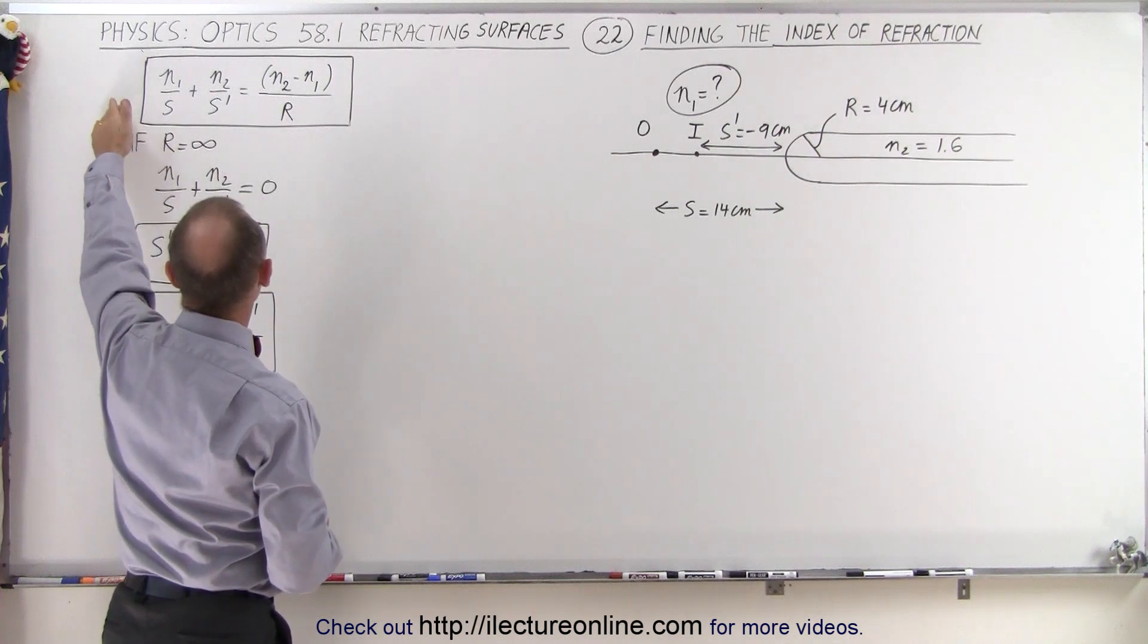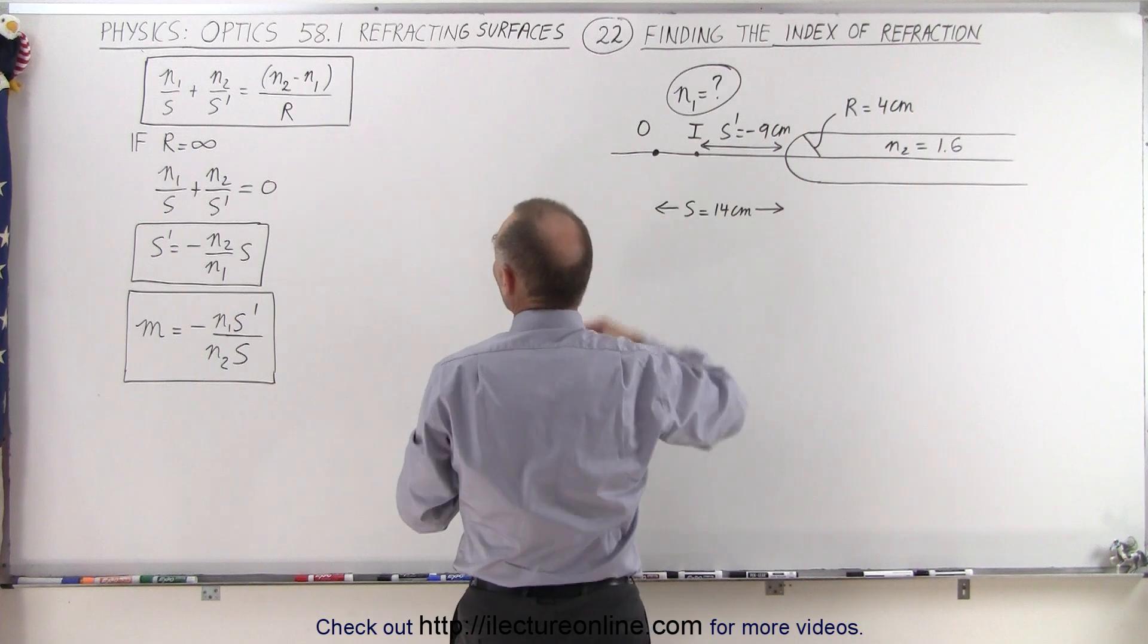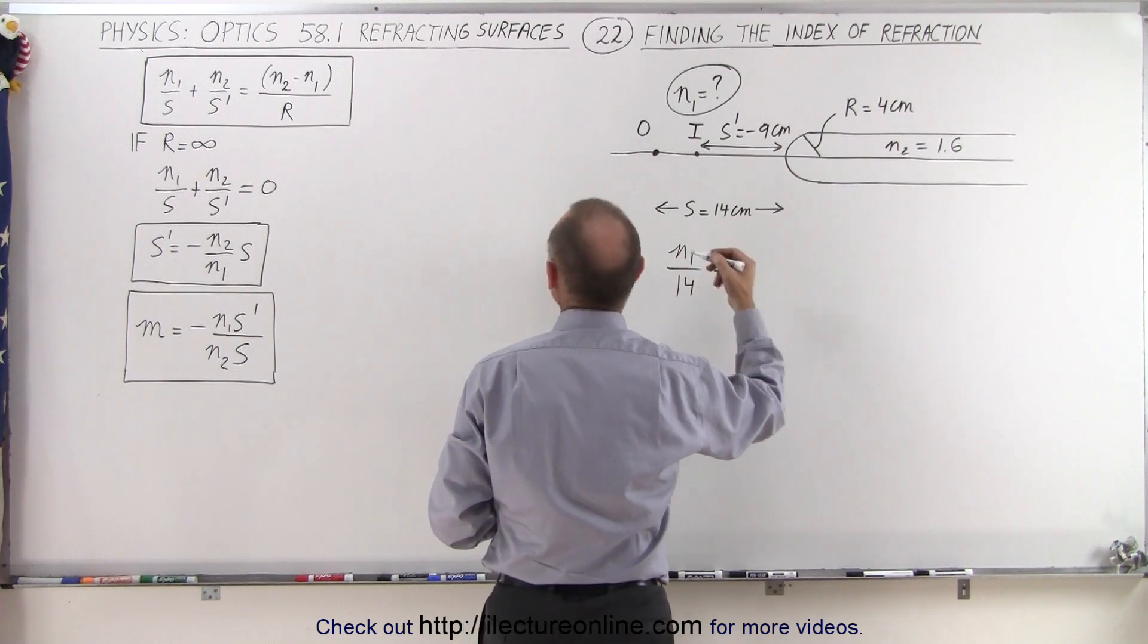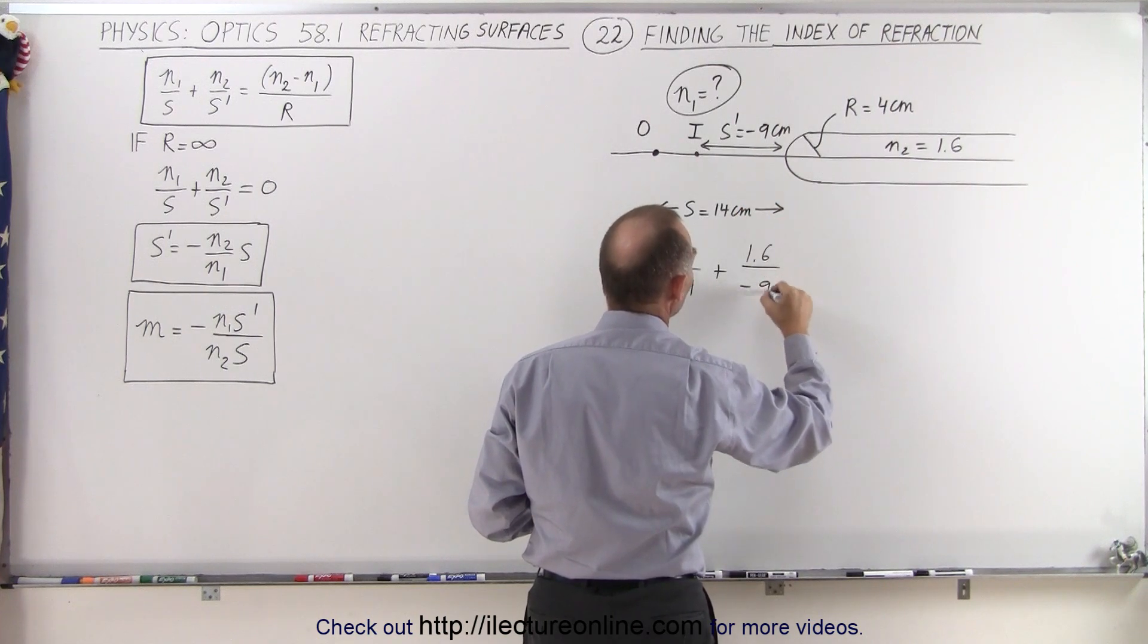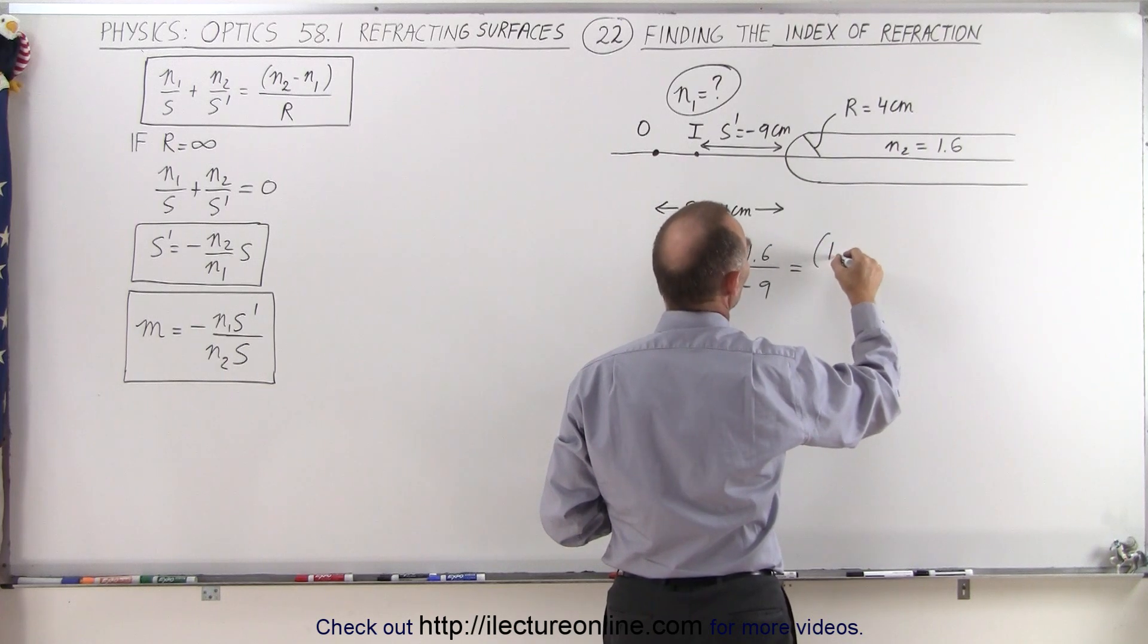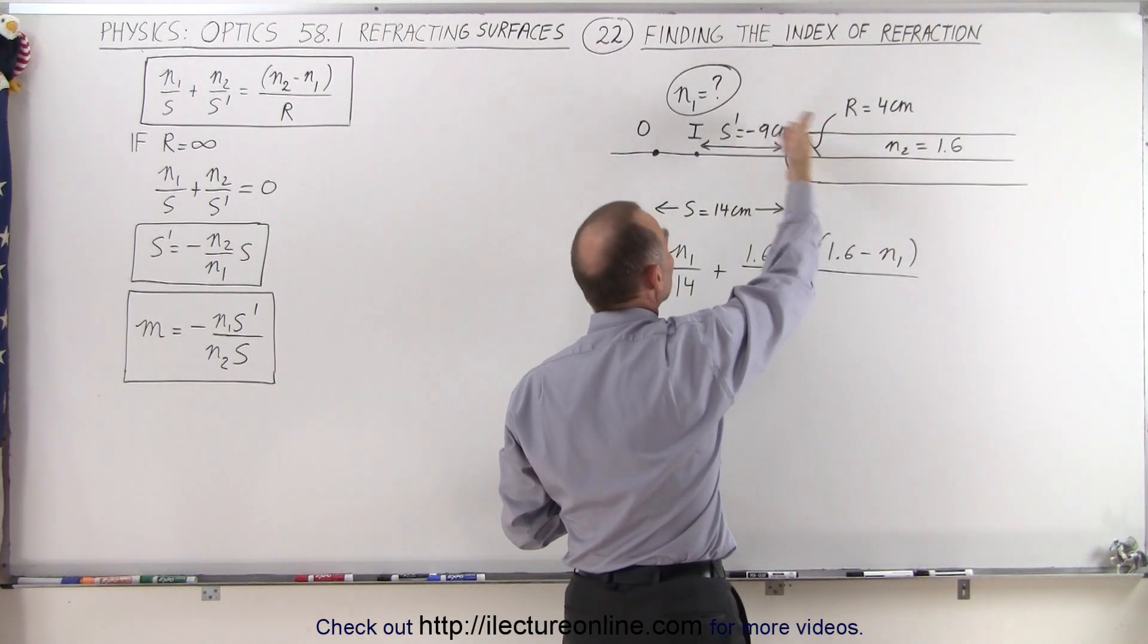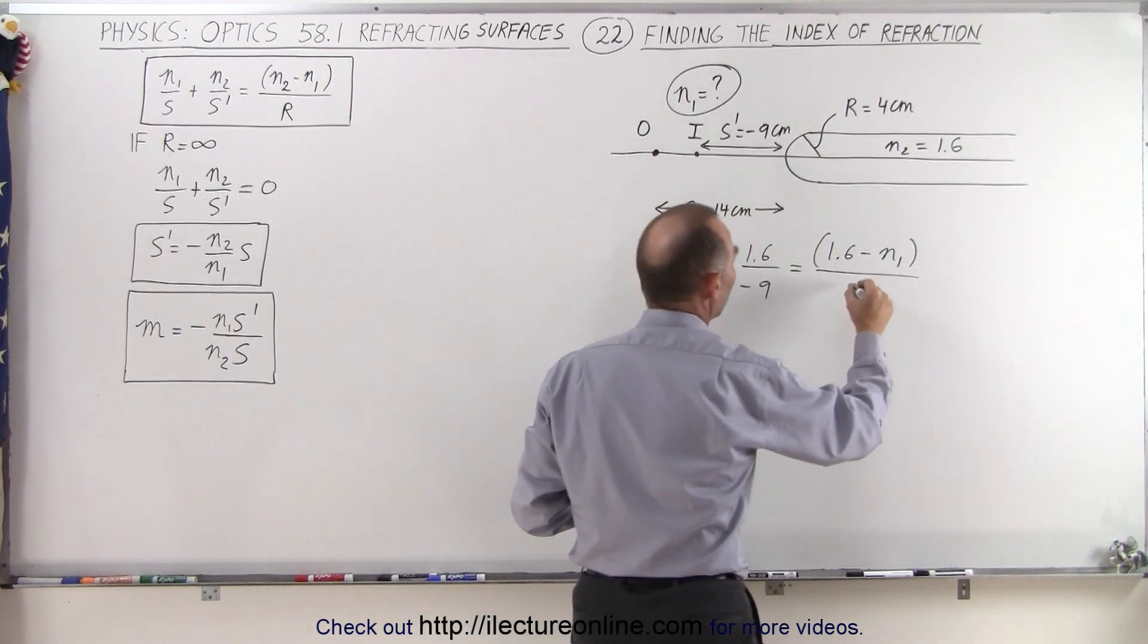Well, we're going to use the same equation as we always do. Let's plug in the values that we know. Now n1 is going to be the unknown quantity, so in this case we have n1 divided by s, which is 14, plus n2, which is known to be 1.6, divided by the image distance, which is minus 9. And that's going to be equal to n2 minus n1. n2 is 1.6, n1 is the unknown index of refraction, divided by r. Now since r is convex towards the object, that's going to be a positive radius of curvature, so we put in a positive 4.